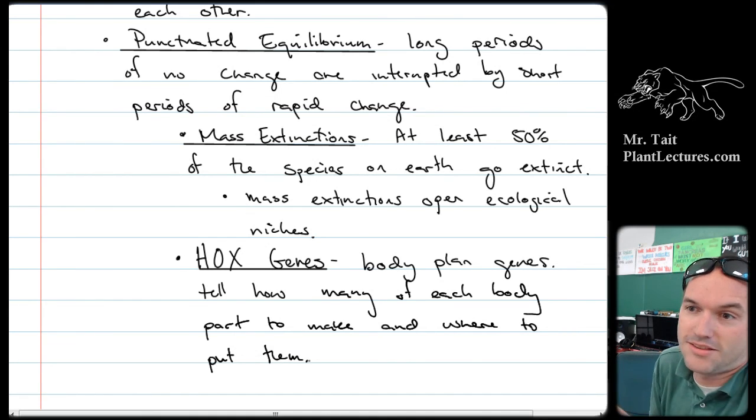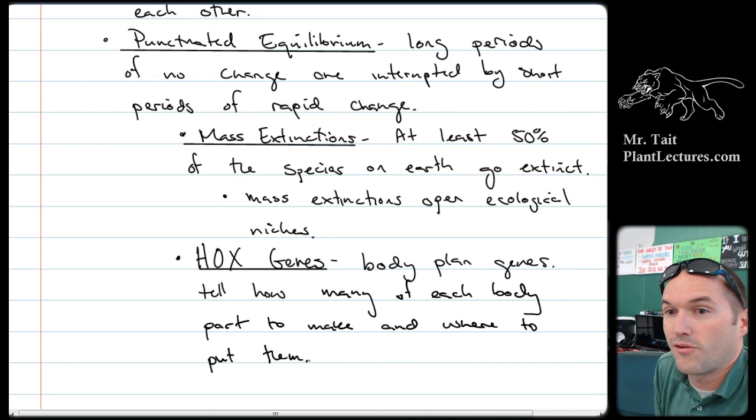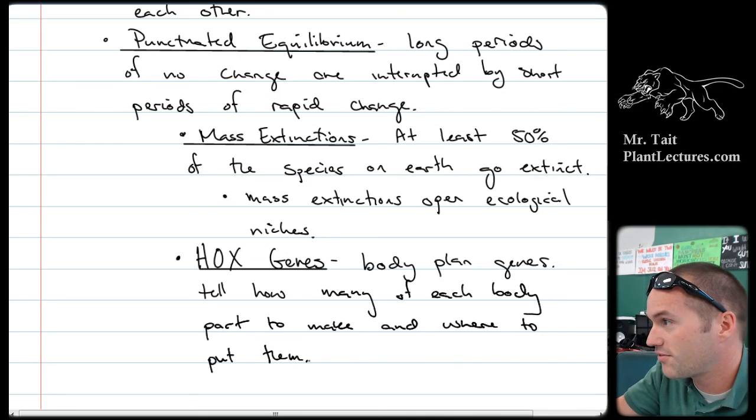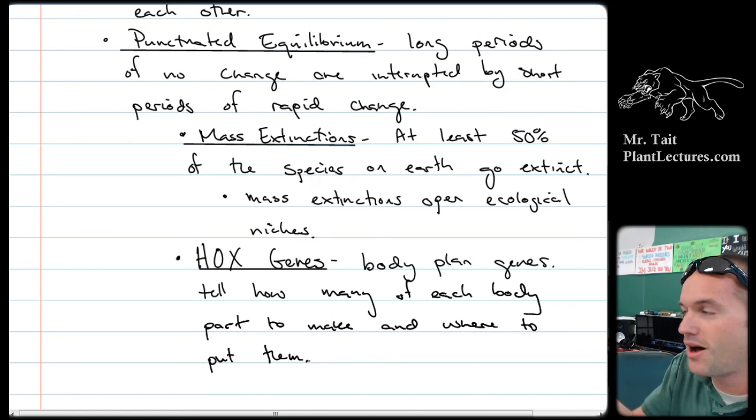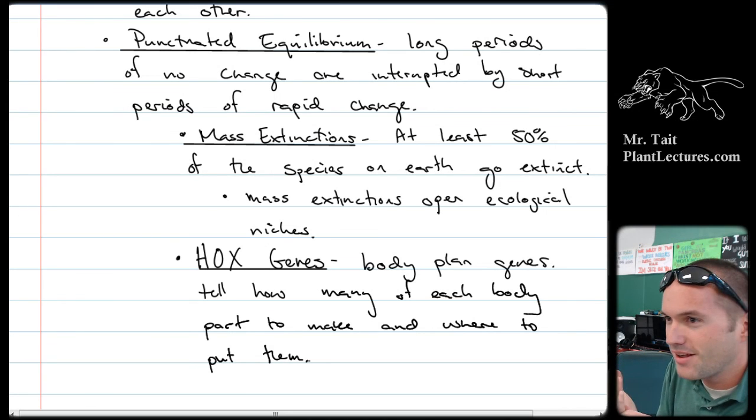And it doesn't take that much. It could be a single nucleotide polymorphism. One nucleotide shift. And that causes you to get a whole extra finger. Think about how complex it is to make a finger, right? Lots and lots and lots and lots of genes are involved in the making of a single finger, right? You've got all the epithelial. You've got the muscles, the bones, and all that stuff, right?